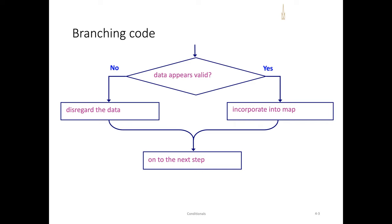A simple branch statement might appear as follows: if the condition being tested is yes, we can provide a specific output. If the condition being tested is no, we can have another alternative output. After the branch, the program's line of execution will continue, allowing for various options to occur in our coding applications.